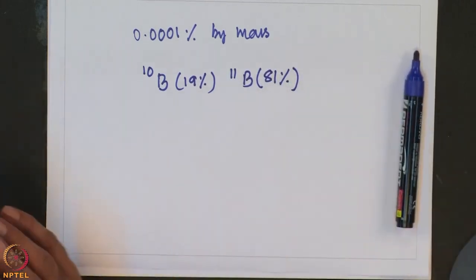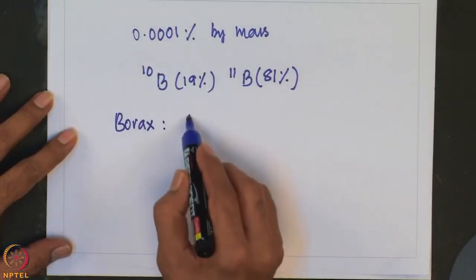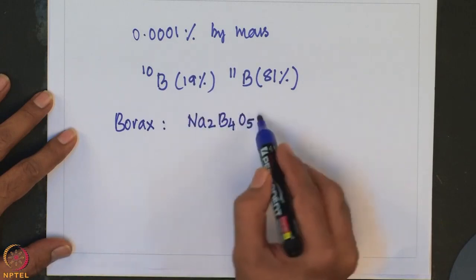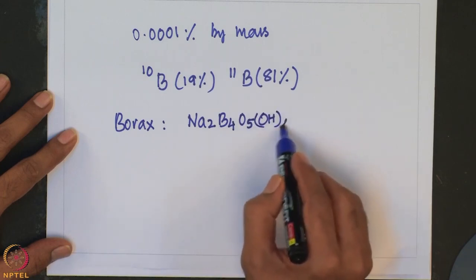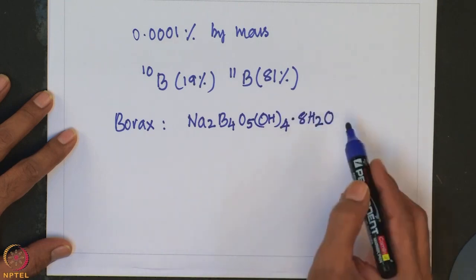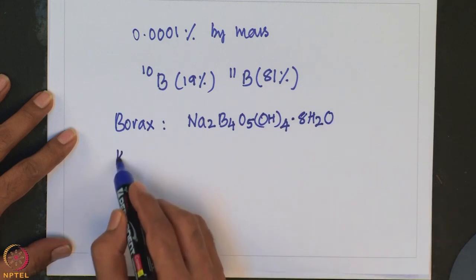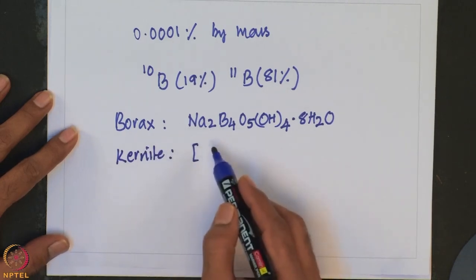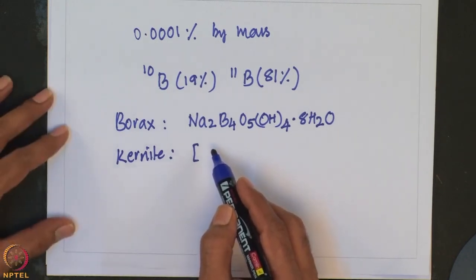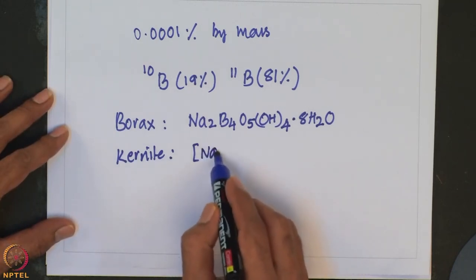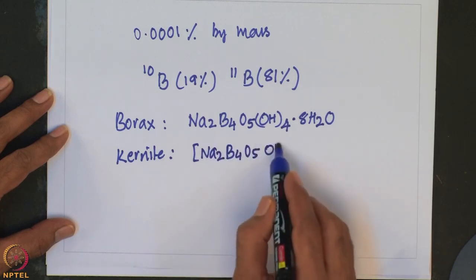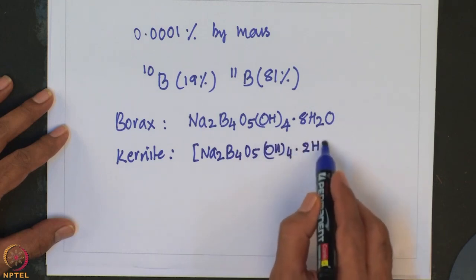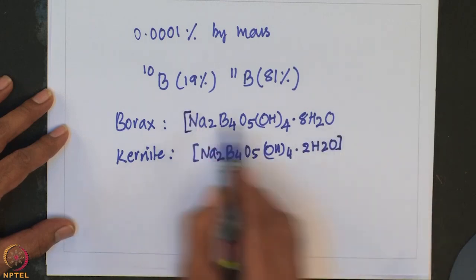The most common sources of boron are borax, which is nothing but Na2B4O5(OH)4·8H2O, and another one is kernite. It is also very similar to borax but it only differs in the amount of solvent, hydrated water molecules, solvated water molecules: Na2B4O5(OH)4·2H2O. They are essentially hydrated sodium borate hydroxide minerals.